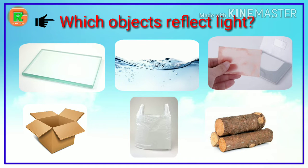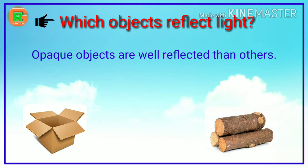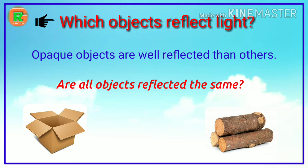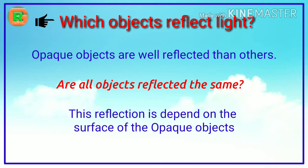Which objects reflect light? Already we know that opaque objects are well reflected than transparent and partially transparent objects. Are all objects reflected the same? No, this reflection is dependent on the surface of the opaque objects.